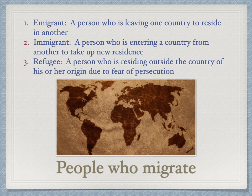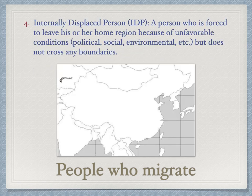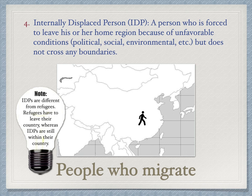A refugee is a person residing outside their country of origin due to fear of persecution. An internally displaced person, or IDP, is forced to leave their home region due to unfavorable conditions but does not cross any national boundaries — such as fleeing a city during a war but staying within the same country. Refugees must leave their country; IDPs remain within it. In the U.S., we deal more with refugees than IDPs.